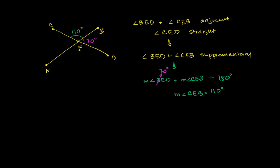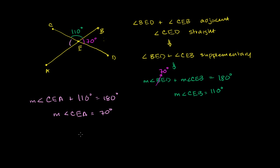If you did this problem quickly in your head, you'd say: this is 70 degrees, this angle plus this angle is 180 degrees, so this has to be 110 degrees. Now let's use the same logic to figure out what angle CEA is. Angle CEA and angle CEB are adjacent — they form a straight angle if you look at their outsides, so they must be supplementary, adding up to 180 degrees. The measure of angle CEA plus the measure of angle CEB, which is 110 degrees, must equal 180 degrees. Subtract 110 from both sides: the measure of angle CEA is equal to 70 degrees.